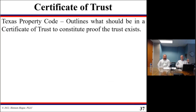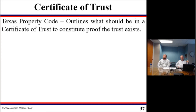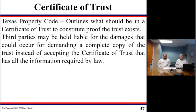Under the Texas Property Code, it outlines what should be in a certificate of trust to constitute proof that the trust exists. The certificate of trust — which goes by other names — is the required document. Third parties may be held liable under Texas law for damages that could occur for demanding a complete copy of the trust instead of accepting the certificate of trust that has all the information required by law. Some institutions will want more information, and it's okay to give them some.